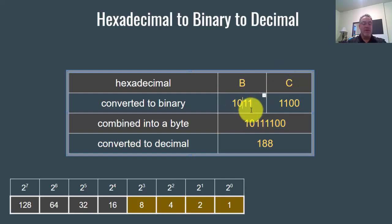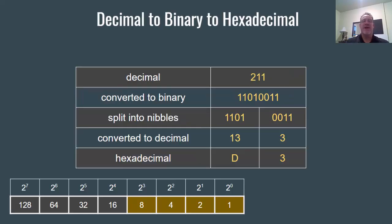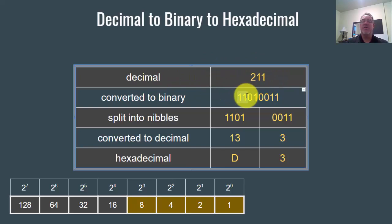If you had, let's say, 1, 1, 1, 1, you'd have an F. So let's try it one more time. In this case, we have the number 211. I quickly convert 211 into binary, which is 11010011. 128 plus 64 is 192, plus 16 is 208, plus 2 is 210, plus 1 is 211.